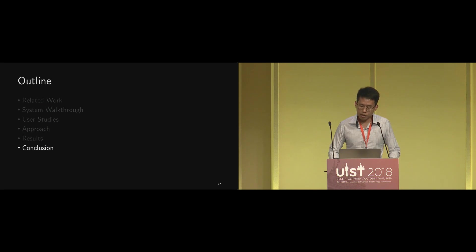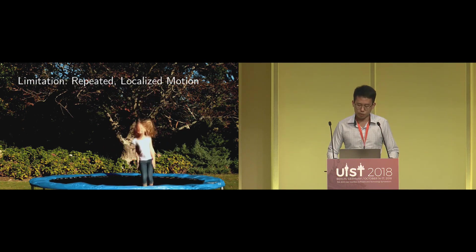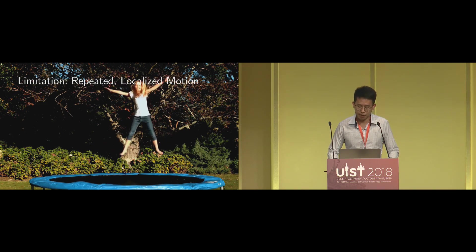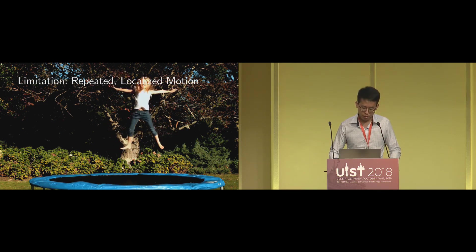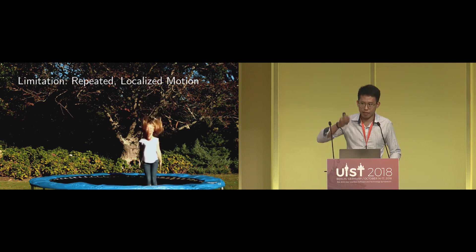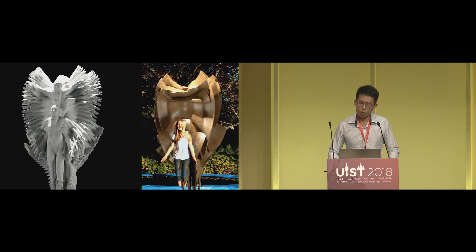I'm concluding my talk with the limitation of visualizing motion as sculptures. Molescope works well on motion spanning large space but less well on more localized motion. In this trampoline example, the motion is rather localized and repetitive, and the sculpture looks somewhat cluttered and doesn't really tell much about the motion.